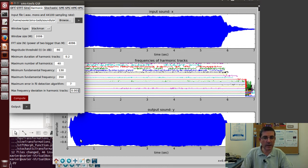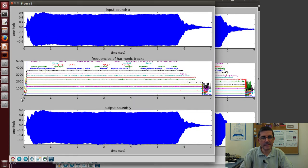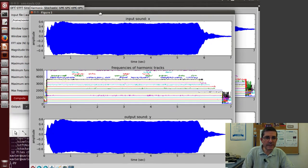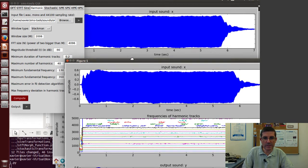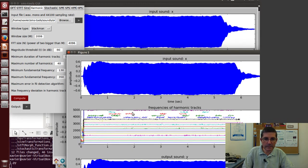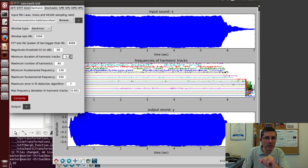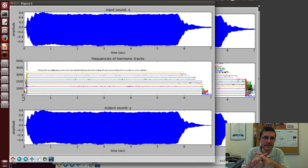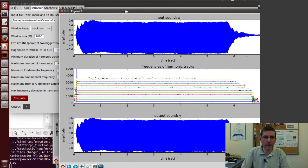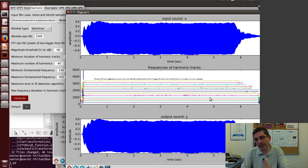One way to get rid of that is to reduce the deviation and restrict it even more. Let's put 0.001 and see what happens. Okay, now we got rid of some of these partials, but maybe an even better way is to make sure they're long enough. Instead of 0.2, let's make sure the harmonics should be at least one second to be considered.